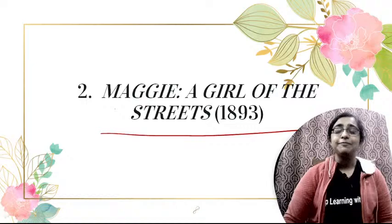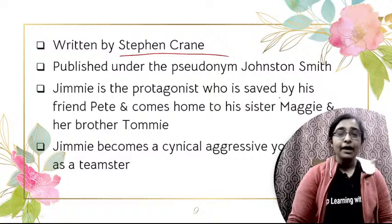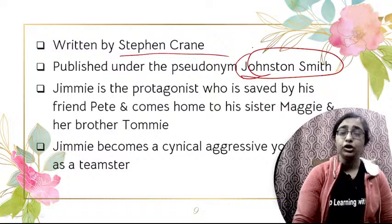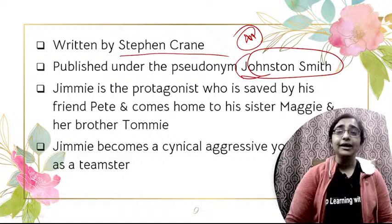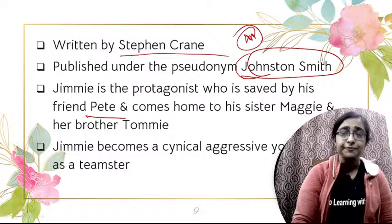The next novel is Maggie: A Girl of the Streets, published in 1893, written by Stephen Crane. It was published under the pseudonym Johnston Smith. The main character is Jimmy, and in the very beginning of the novel it is portrayed that Jimmy is saved by his friend Pete, and comes home to his sister Maggie and her brother Tommy.